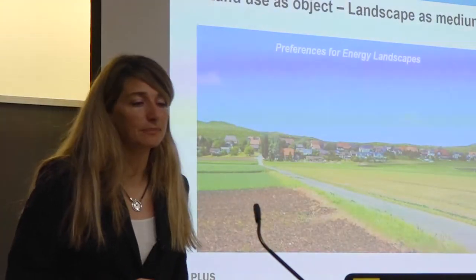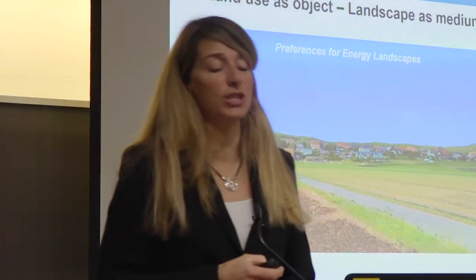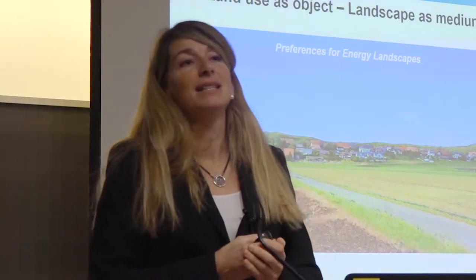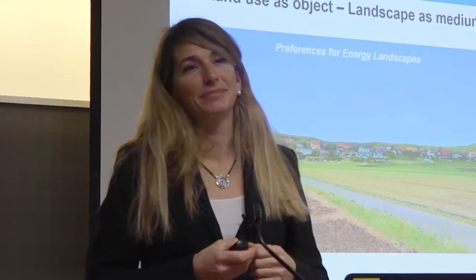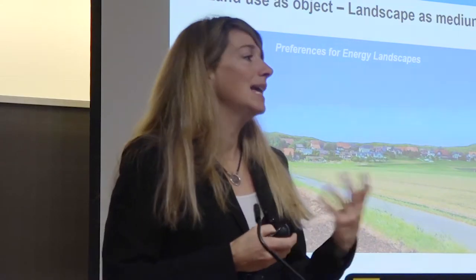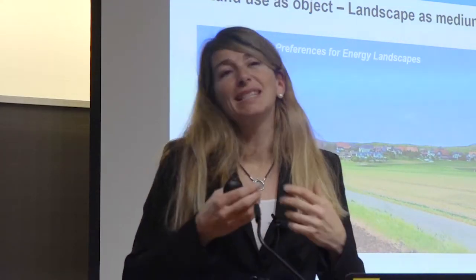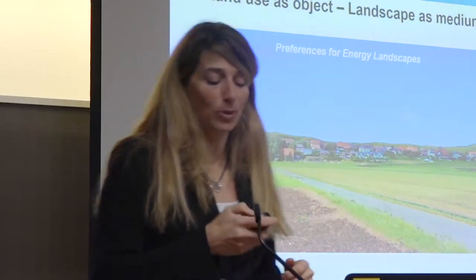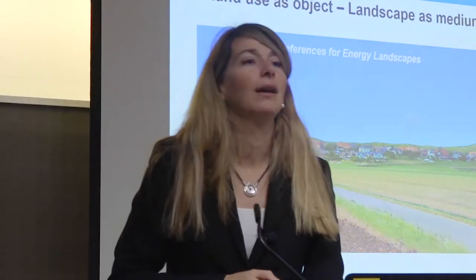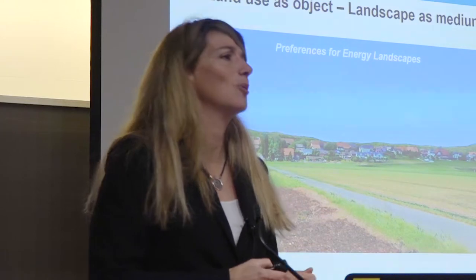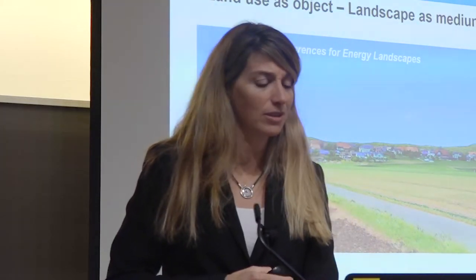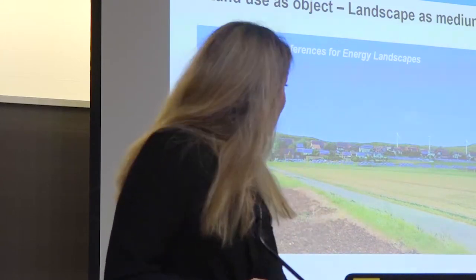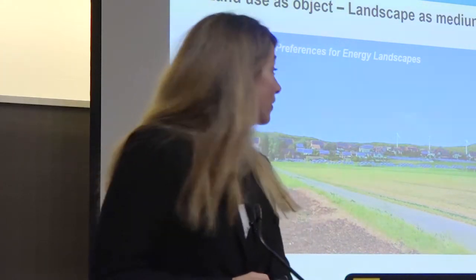Let me come to the fourth point about the approaches. In land system science, landscape is taken as an object — something you try to see how it changes and modify. In landscape design, landscape is more taken as a medium, as something where you have stakeholders interacting. That is important, for example, when you think about energy landscapes. These discussions are very difficult in the United States, but in Switzerland they're even more difficult to get wind turbines into the landscapes.